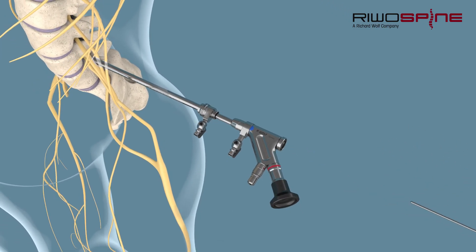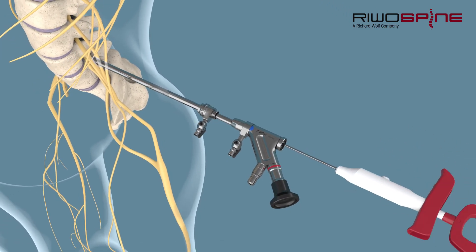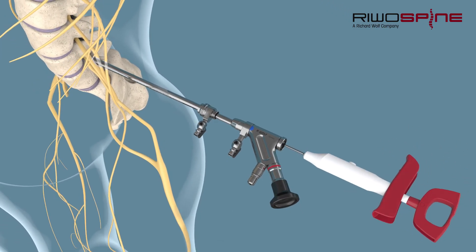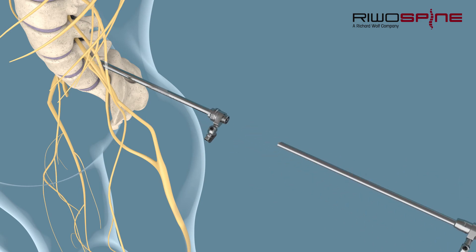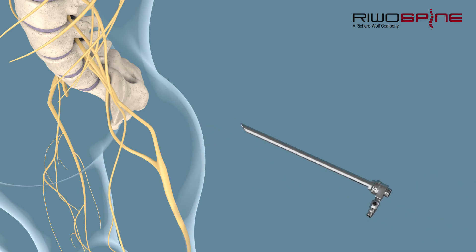For coagulation of vessels and tissue, a specially designed electrode is needed. After the operation, the instruments are carefully removed.